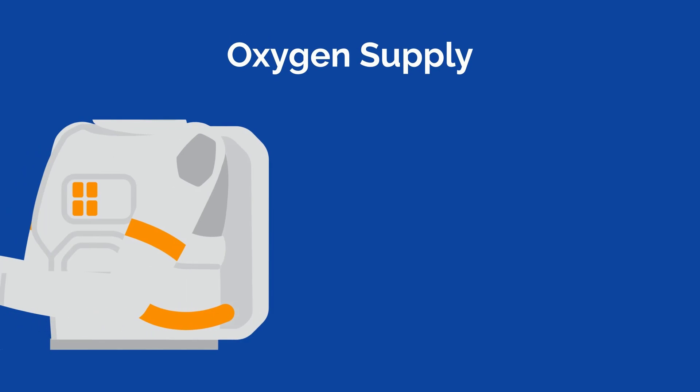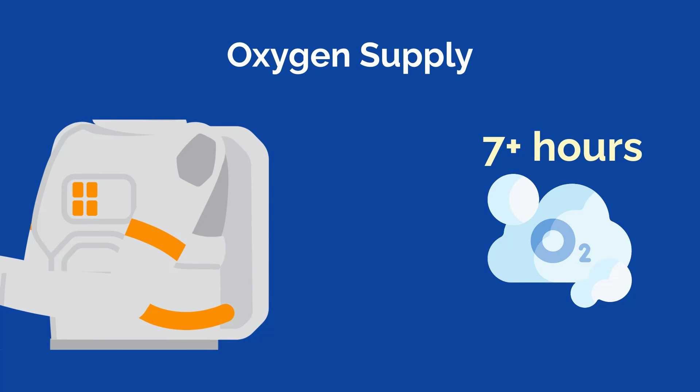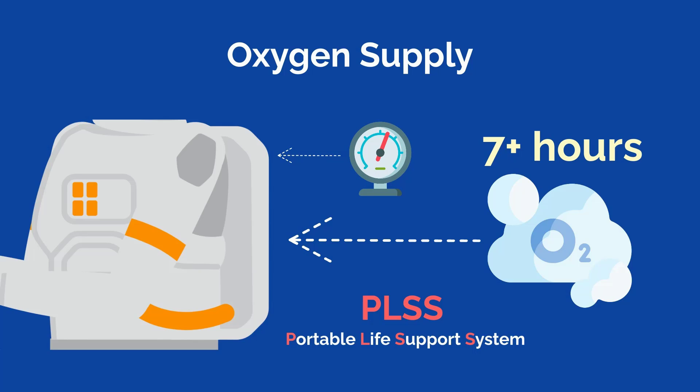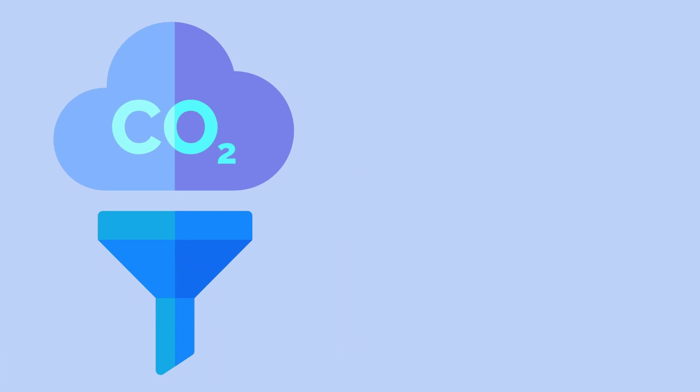Moving on to the oxygen supply, there is over 7 hours worth of oxygen stored in the backpack, otherwise known as the PLSS, Portable Life Support System. This PLSS not only contains the oxygen supply, but also the pressure systems we discussed earlier, carbon dioxide filters to relieve buildup, and a communications system.